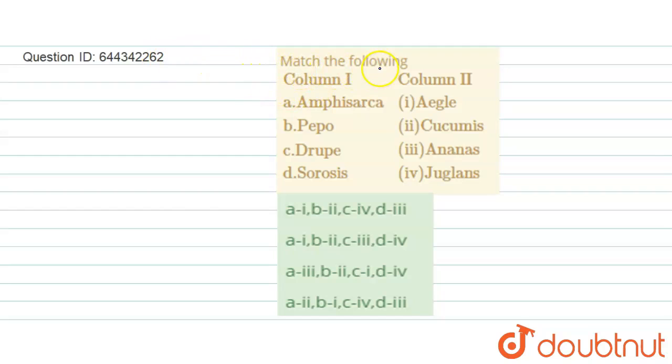The question says match the following column one with column second. First is amphisarca. The amphisarca is a type of fruit which consists of many seeds.